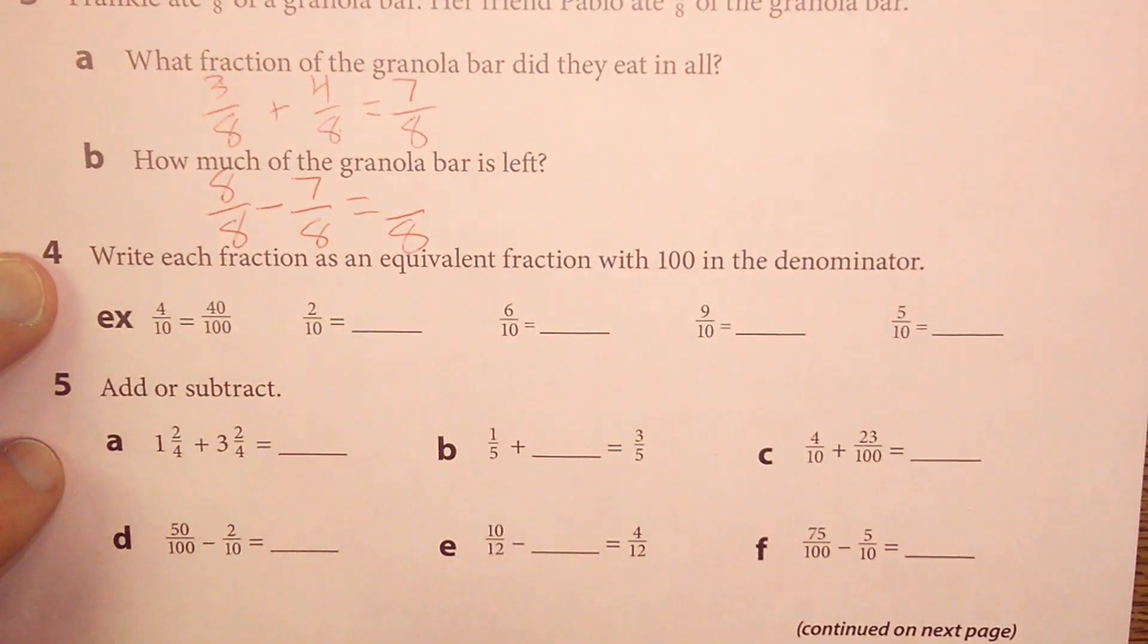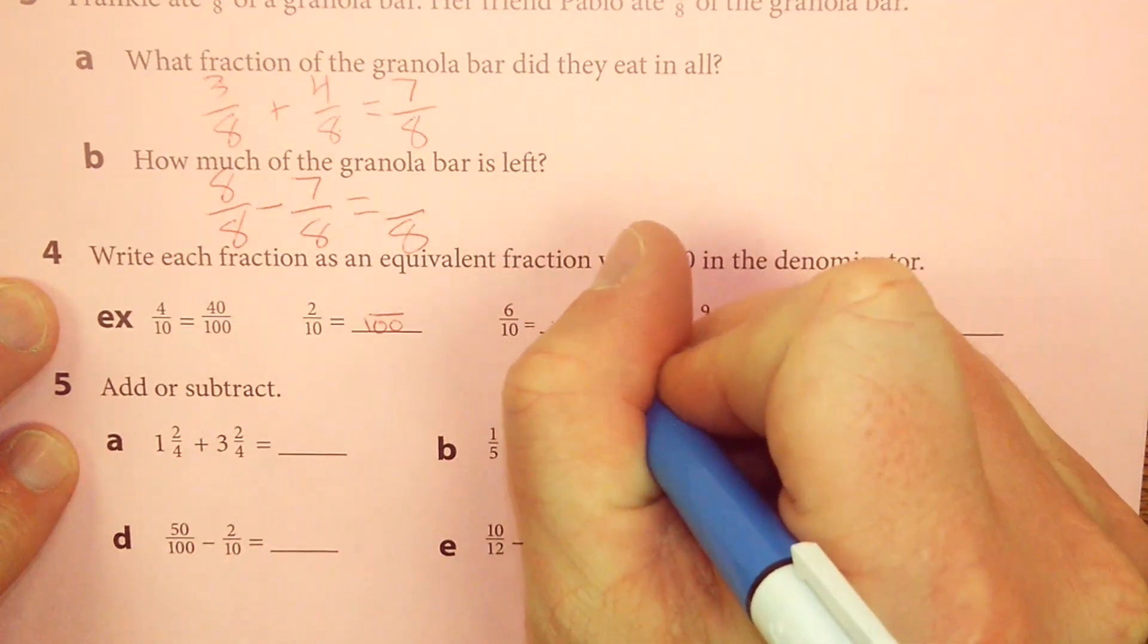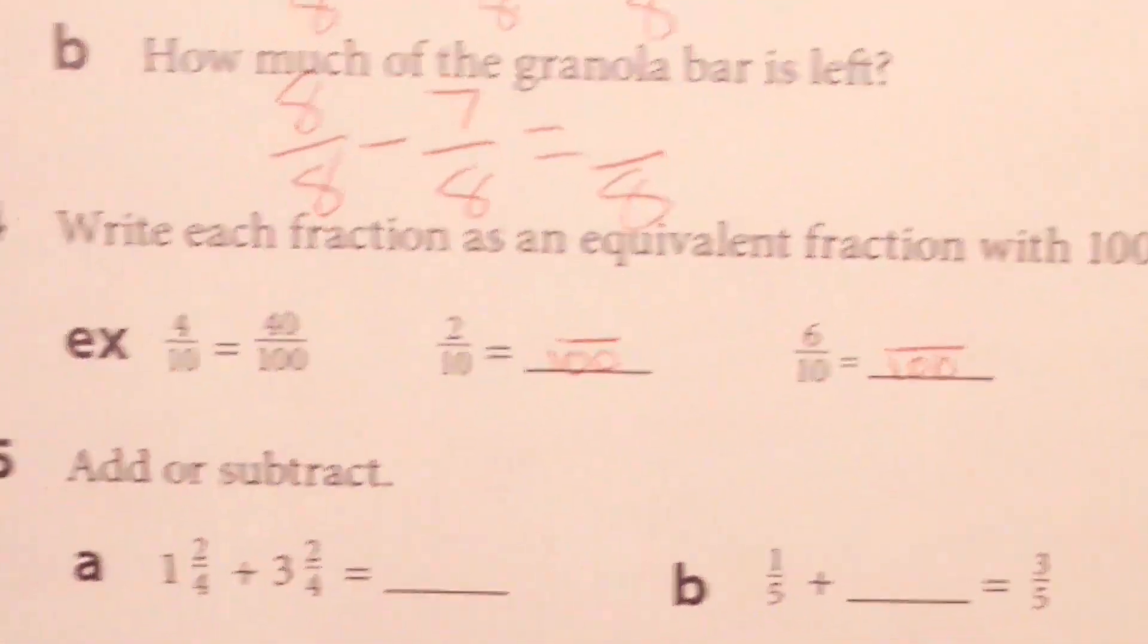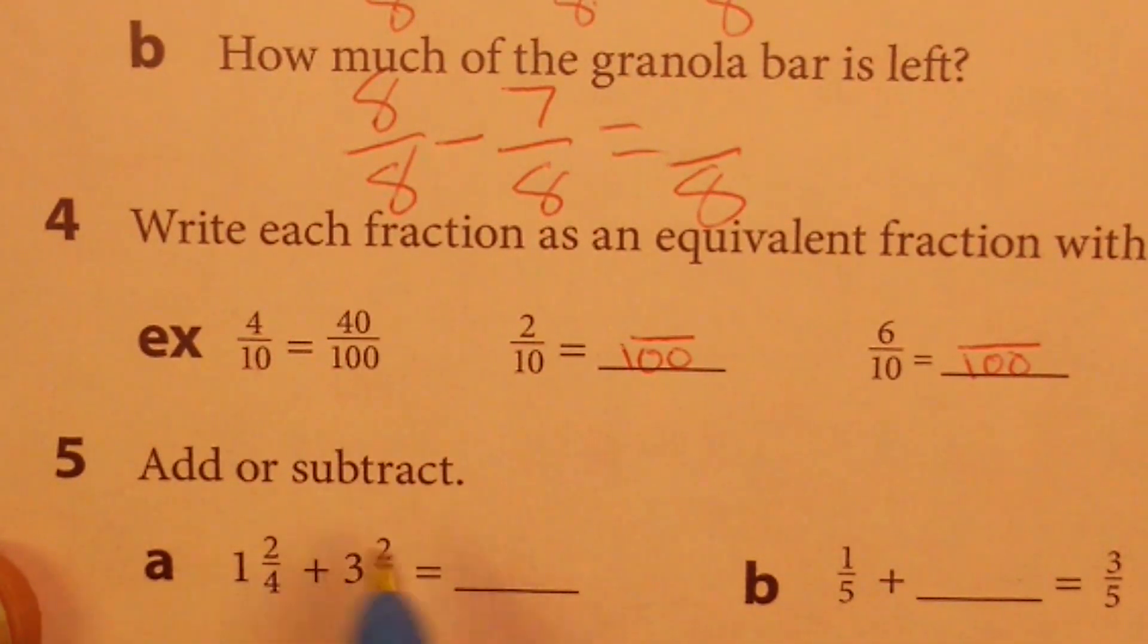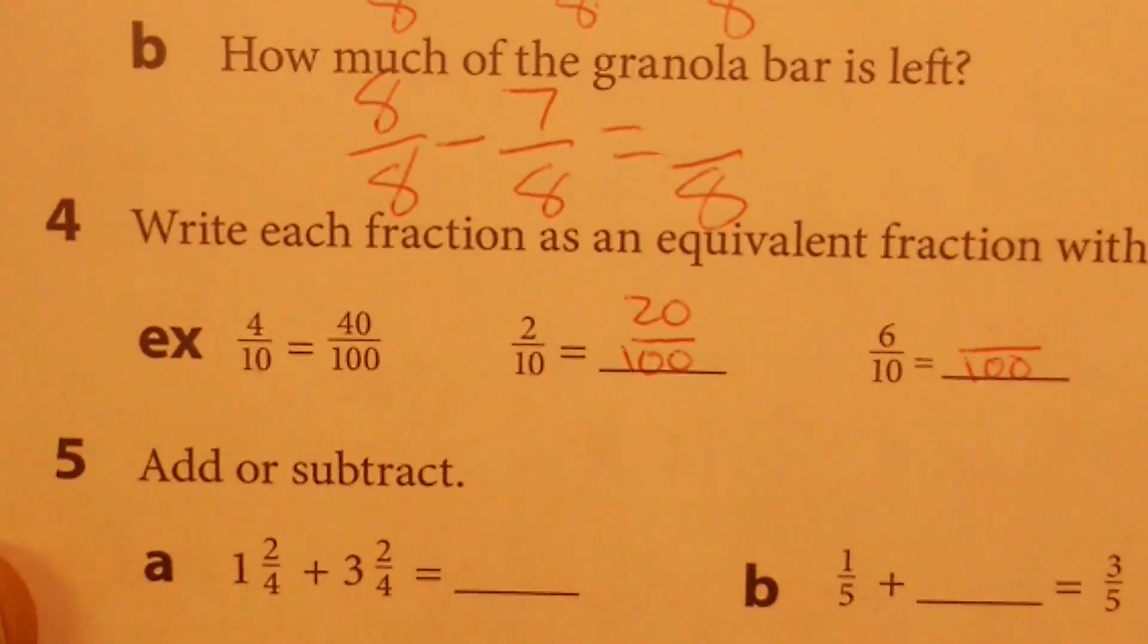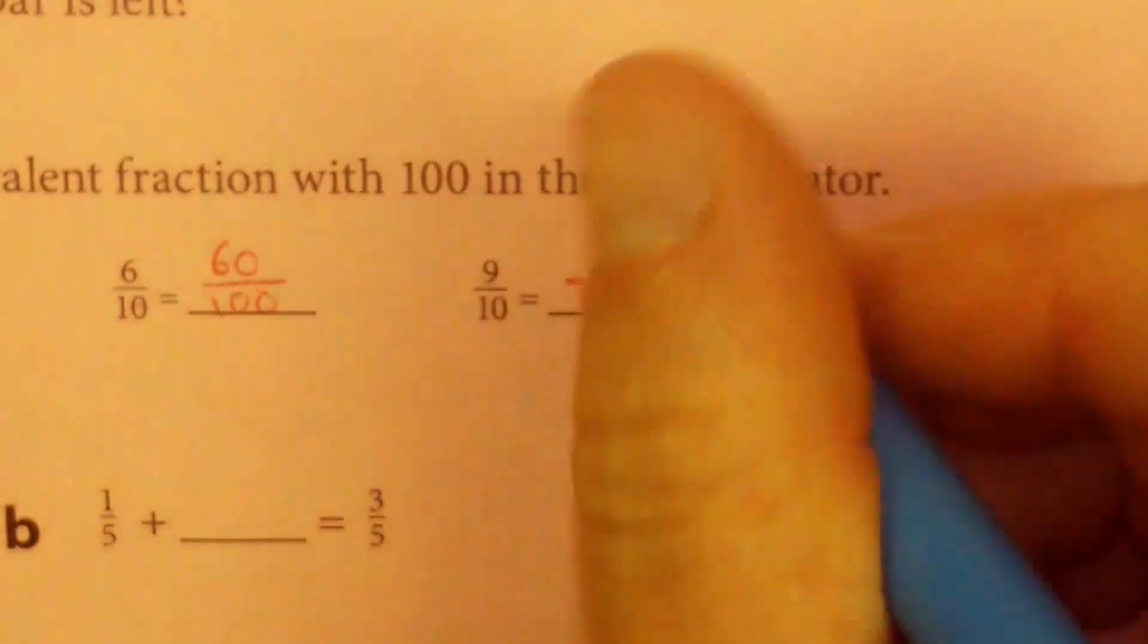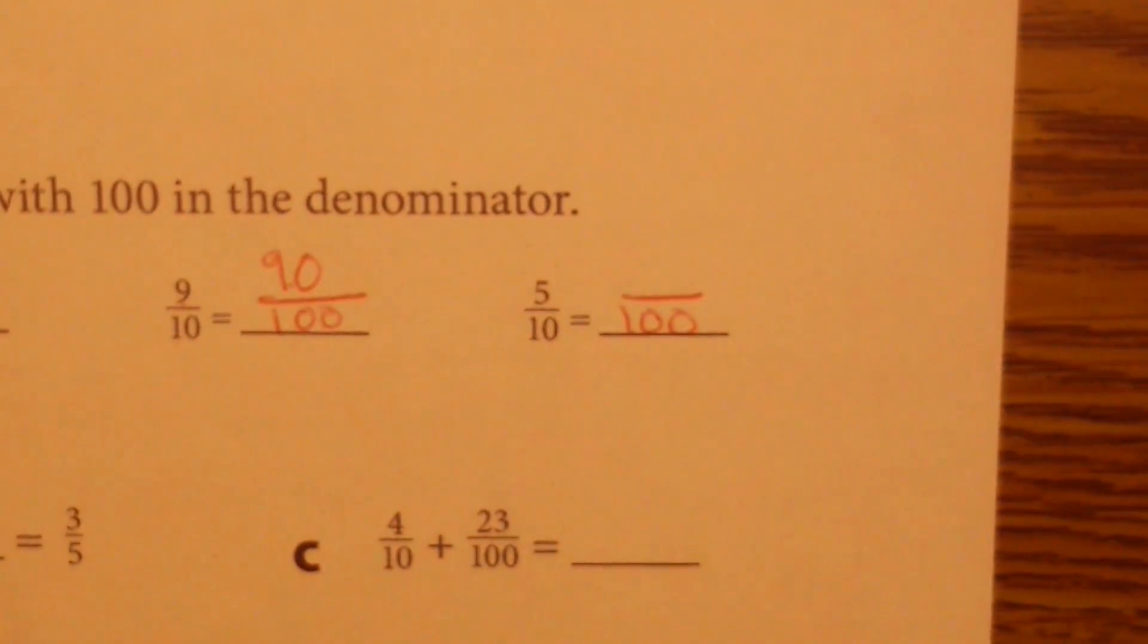Write each fraction as an equivalent fraction with 100 in the denominator. So you could literally, maybe we should just go through and write 100 as the bottom number, the denominator in each answer. I'm going to zoom in to make this a little bit easier to see. But you can see in the first one, if you're working with tenths, you simply add a zero to get the answer. So let's do that. 10 becomes 100 by adding a zero. 2 becomes 20 by adding a zero. 10 becomes 100 by adding a zero. 6 becomes 60 by adding a zero. 10 becomes 100 by adding a zero. 9 becomes 90 by adding a zero. And I'm going to let you do the last one on your own. Don't be afraid to pause this video.